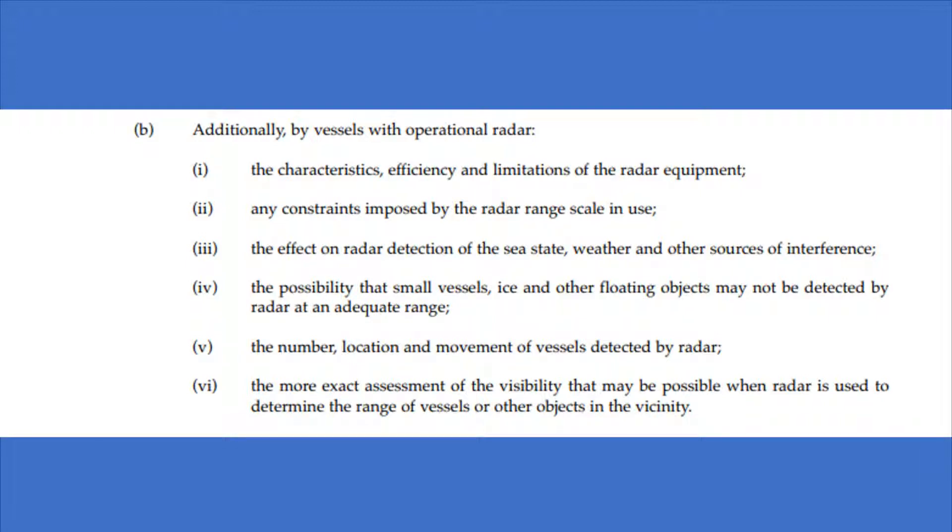The number, location and movement of vessels detected by radar. So, if you have a lot of targets on the radar screen, this is the same as in part A, where we're looking at density of traffic.